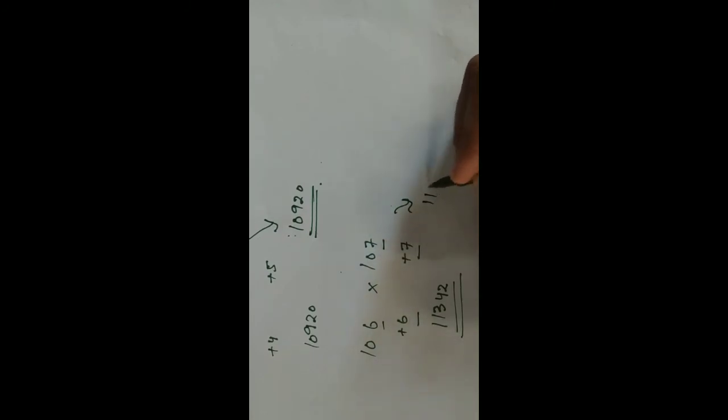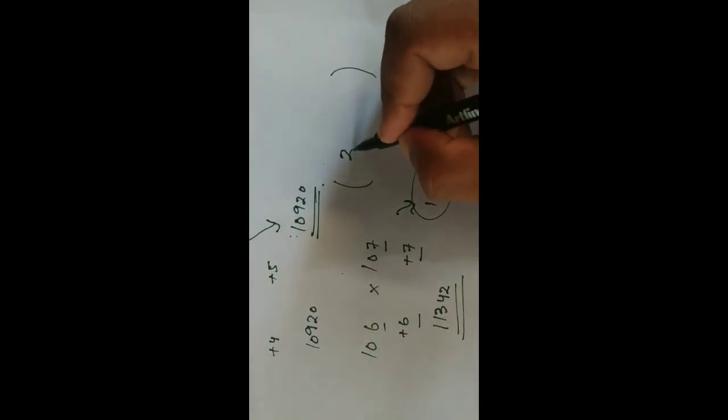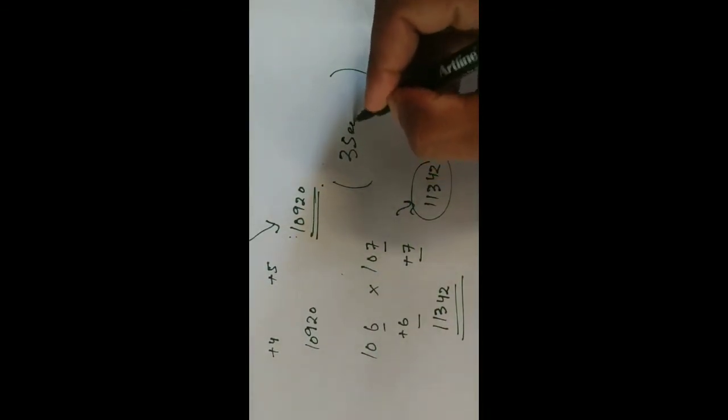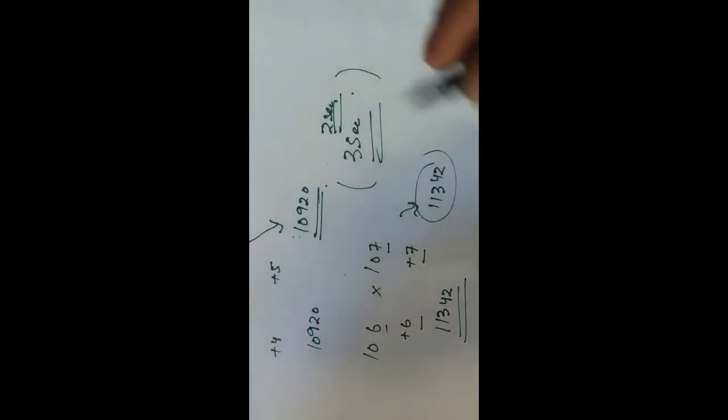Check it right now, you can get 11342, this is your answer. So now what you have to learn is you can do any number that are in hundreds, but they both are in the same. You can get the value within 3 seconds or 2 seconds, that depends upon you, but it's a very easy trick. Thanks guys.